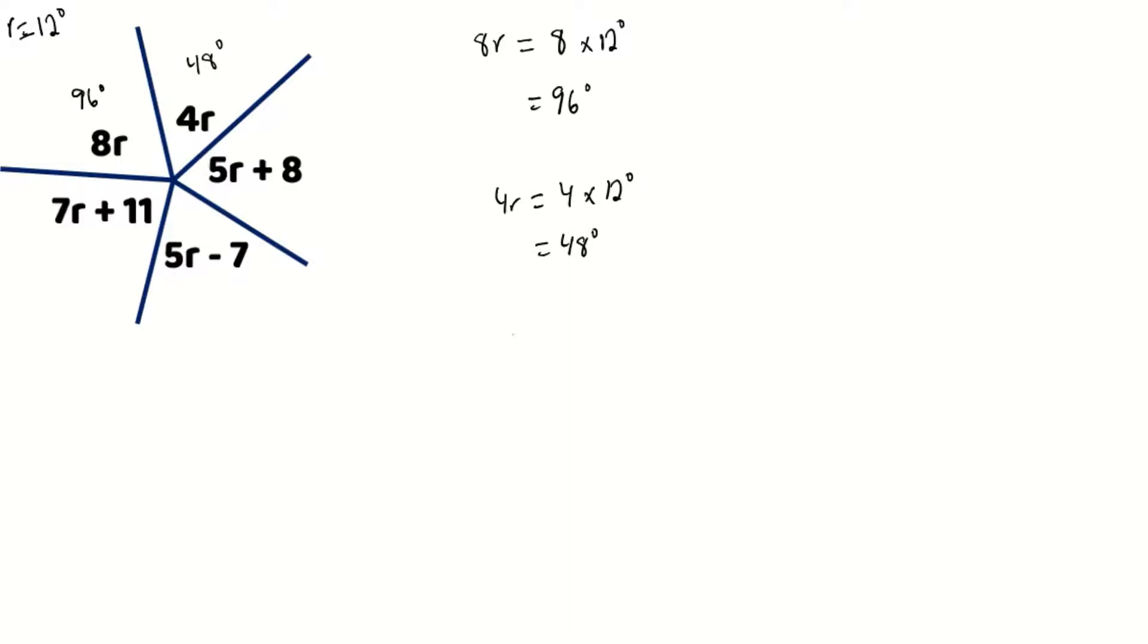And we're now going to calculate our 5r plus 8. And this means that 5 will be multiplied to 12 degrees, and then its product will be added to 8. So 12 times 5 will give us 60 degrees, and 60 degrees plus 8 will equal 68 degrees. So our 5r plus 8 will equal 68 degrees.